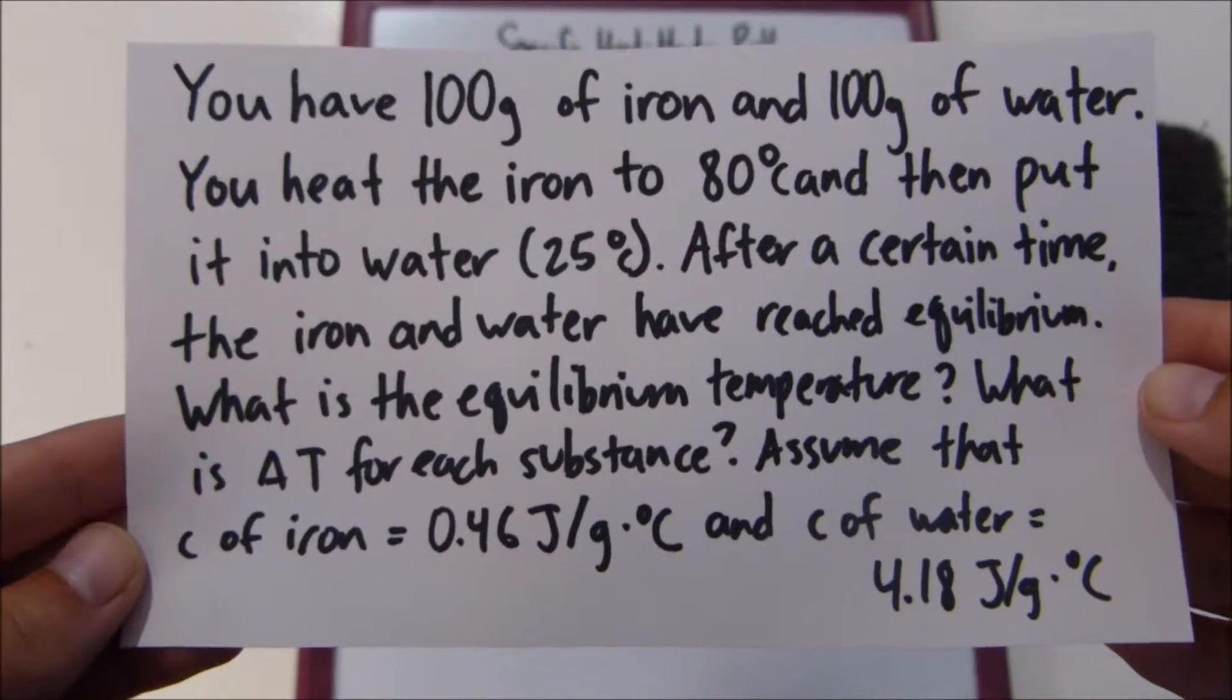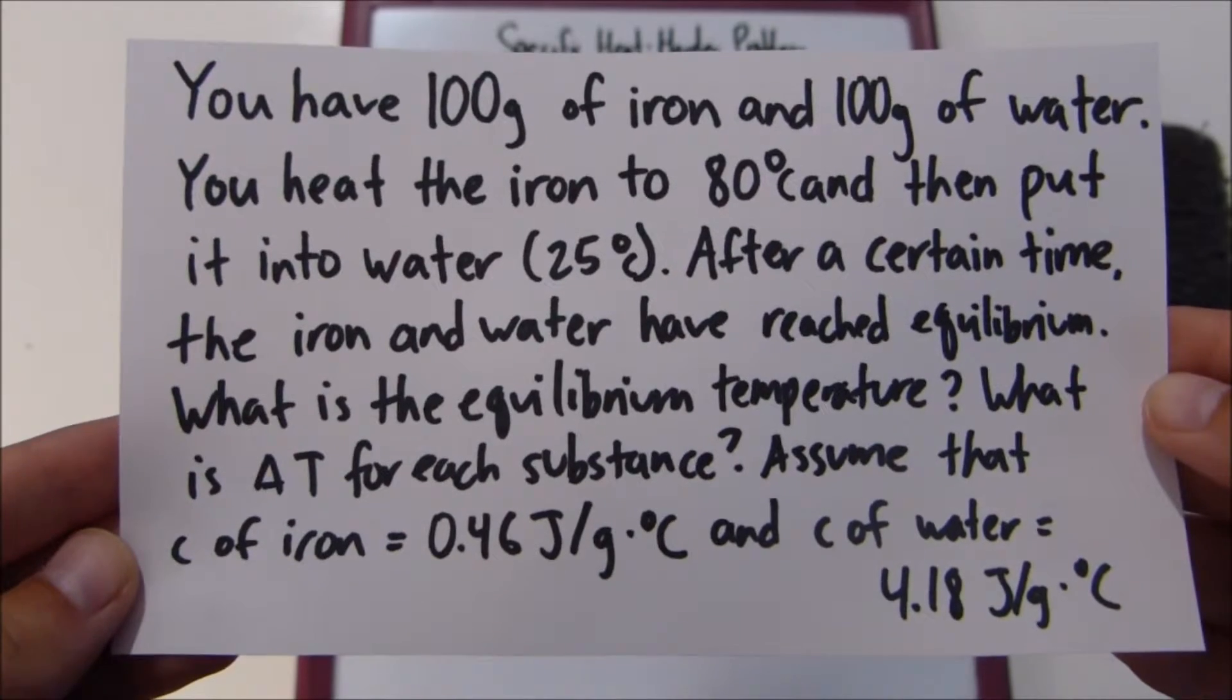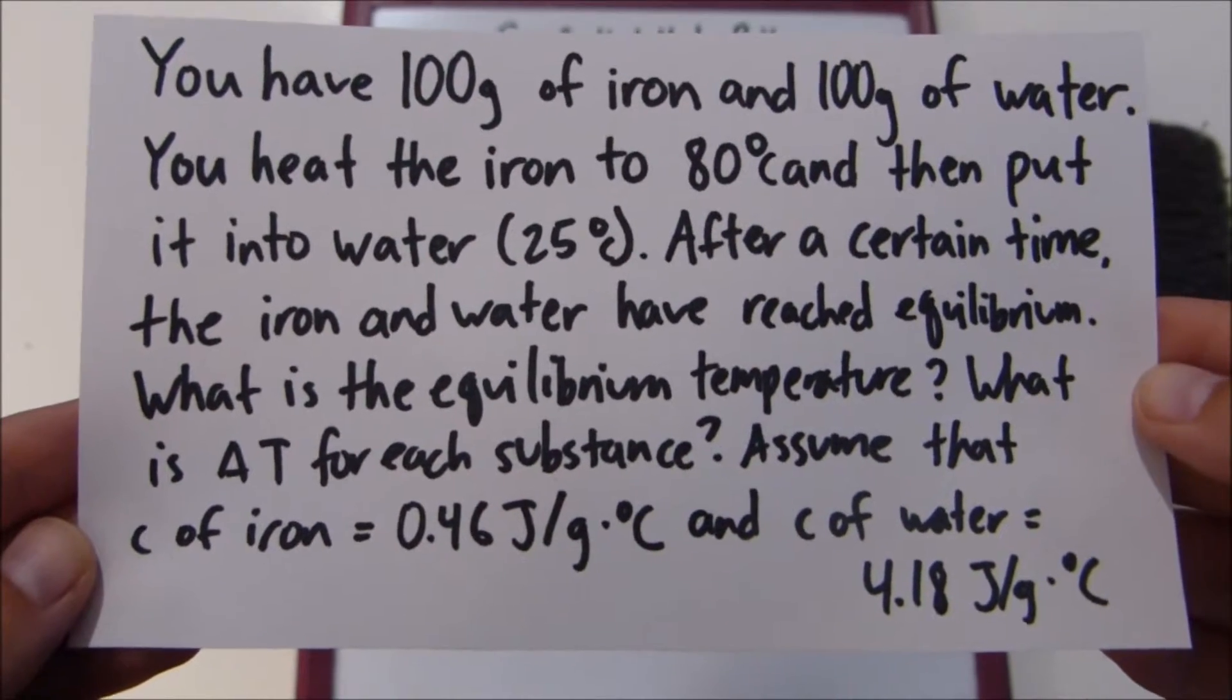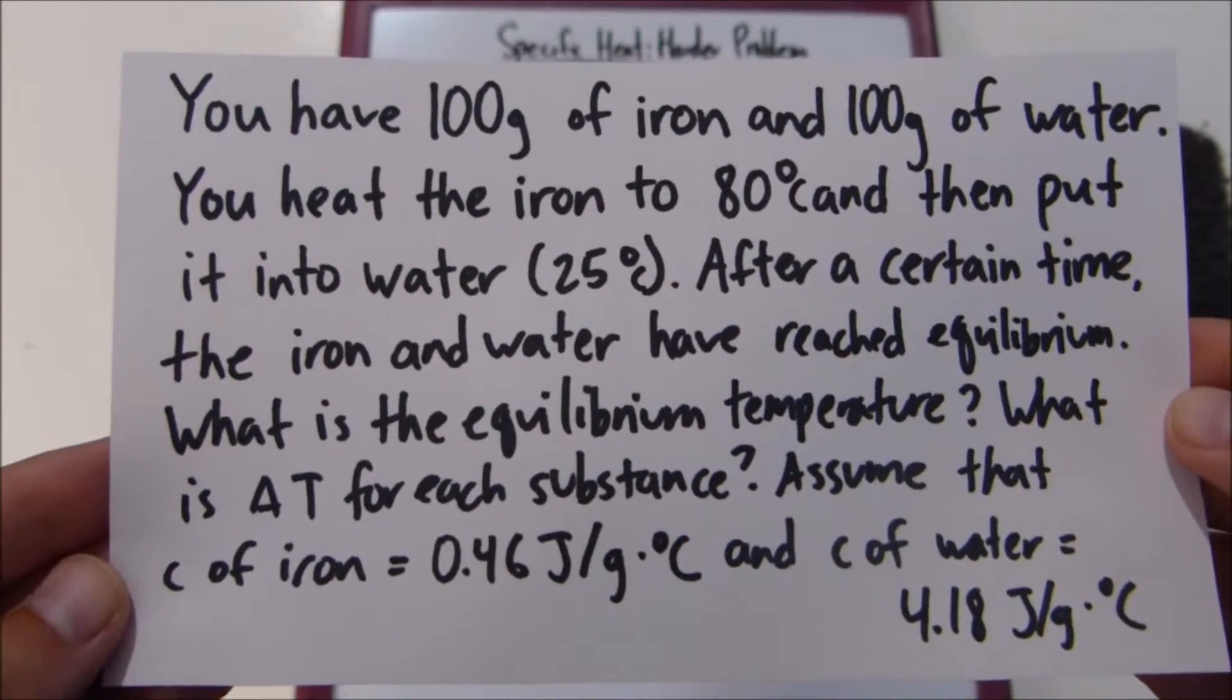You have 100 grams of iron and 100 grams of water. You heat the iron to 80 degrees Celsius and then put it into water, which is 25 degrees Celsius. After a certain time, the iron and water have reached equilibrium. What is the equilibrium temperature? What is delta T for each substance?